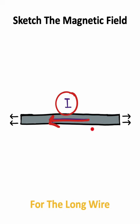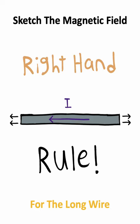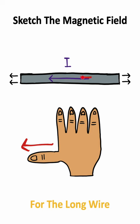To determine the direction of the magnetic field, you need to use something known as the right-hand rule. Take your right thumb and point it in the direction of the current.